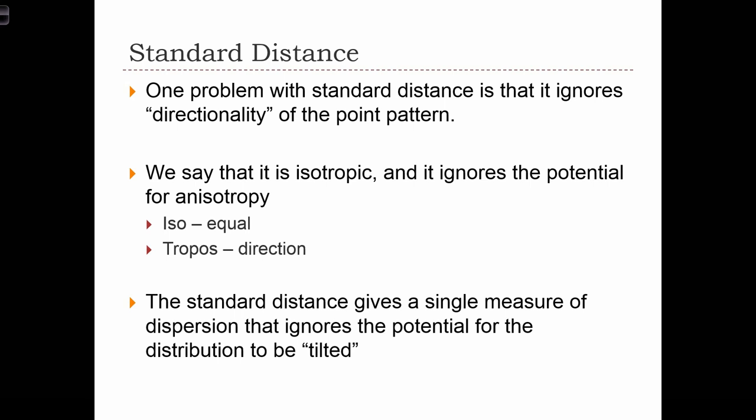Iso means equal and tropos means direction. So an isotropic statistic is one that assumes that the process is even in all directions.